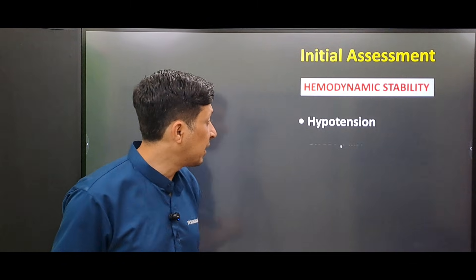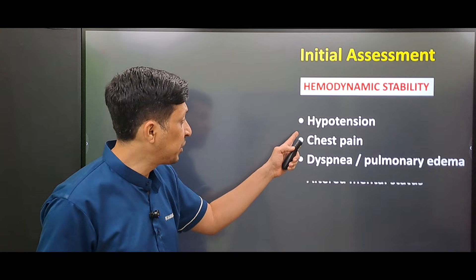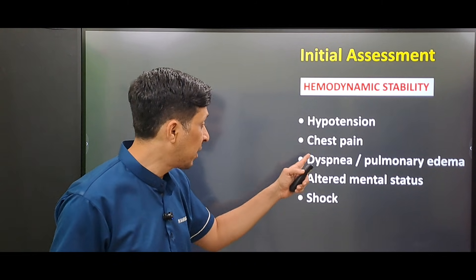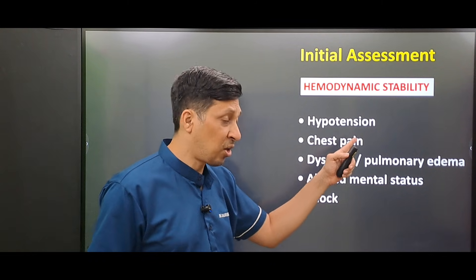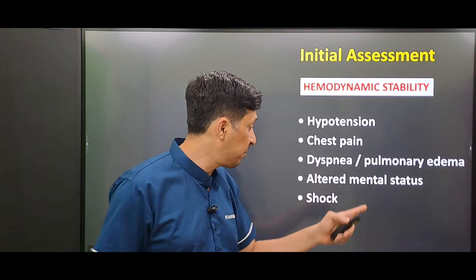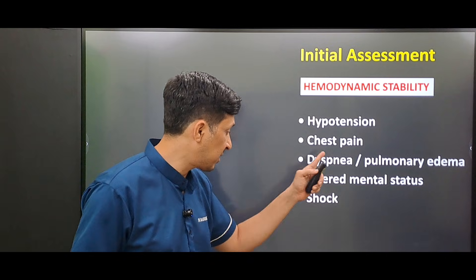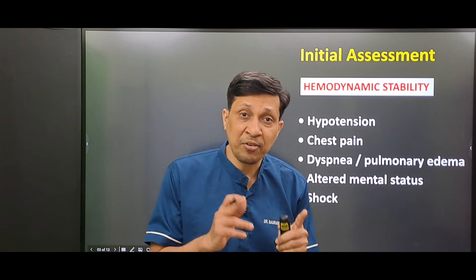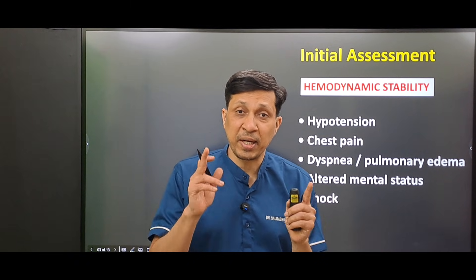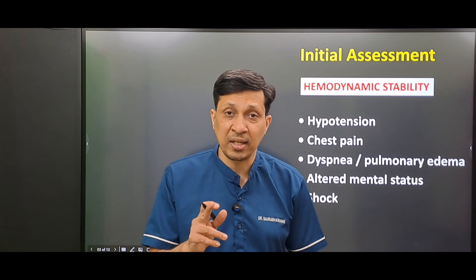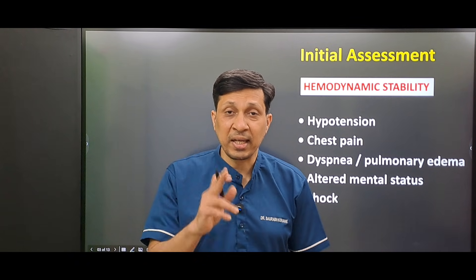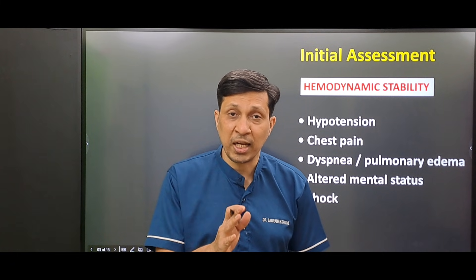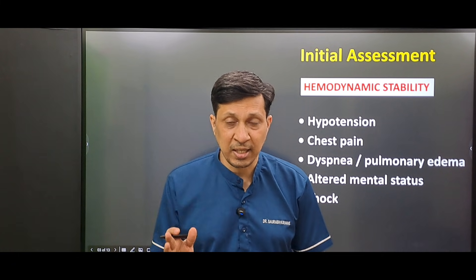If there is hypotension, chest pain, dyspnea or pulmonary edema, or altered mental status or shock — if any one of these is present in the patient, then we can say the patient is hemodynamically unstable.